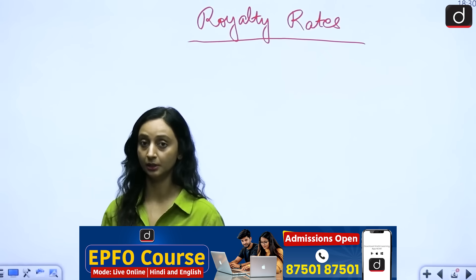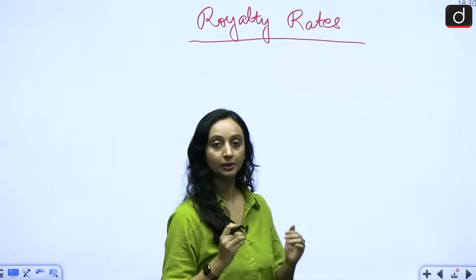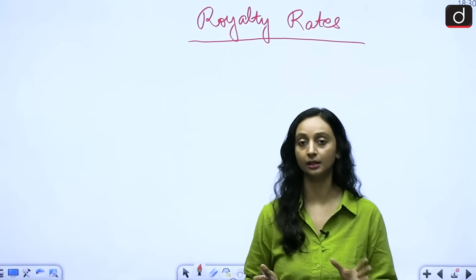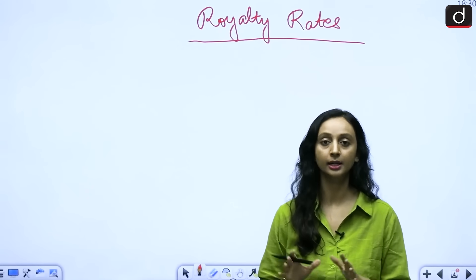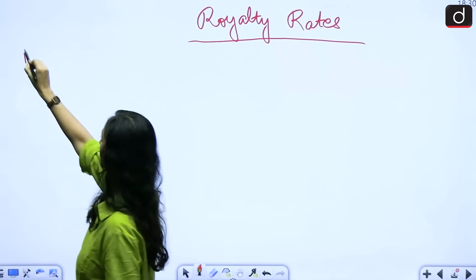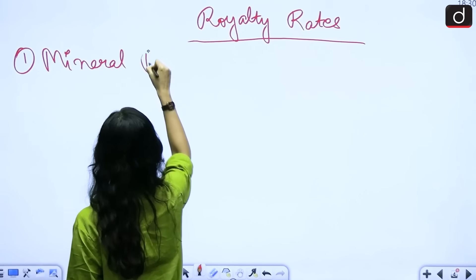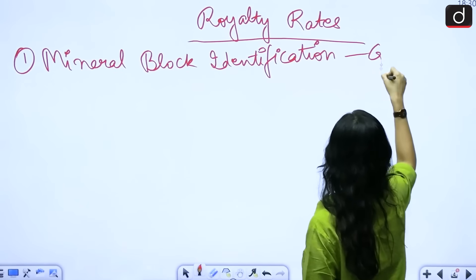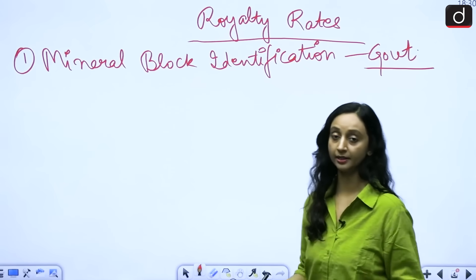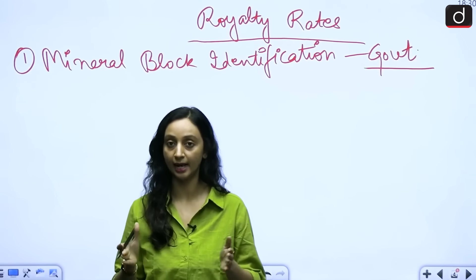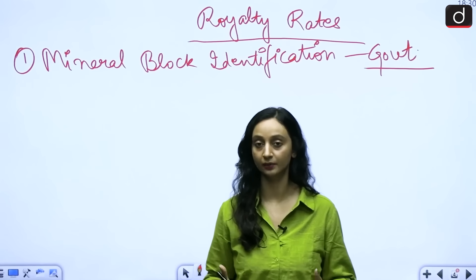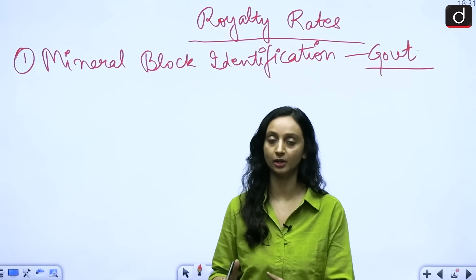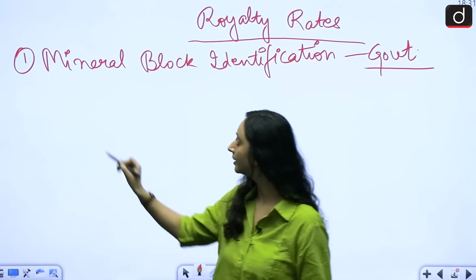To understand this, let's see what used to happen earlier. Mining of critical minerals in India doesn't just happen by companies digging anywhere — there's a proper procedure. The first step is mineral block identification, which is done by the government. This means areas of land are identified and an estimate is made through geological surveys that a particular mineral might be present there, along with the approximate weight expected to be extracted — and that becomes the mineral block.